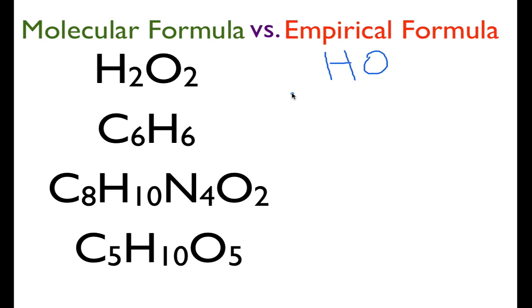Here we have C₆H₆, which is benzene. Both subscripts are 6, so they are divisible by 6. Therefore, the empirical formula for benzene is just CH.